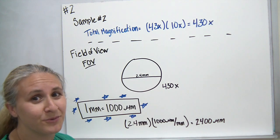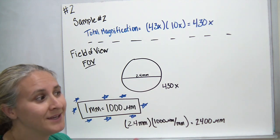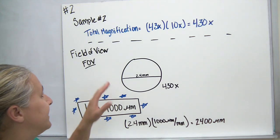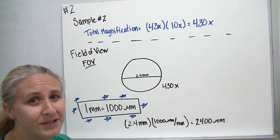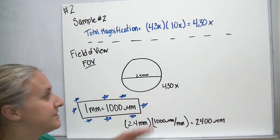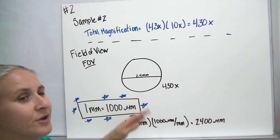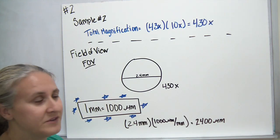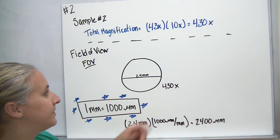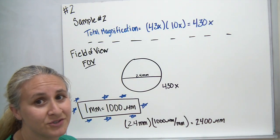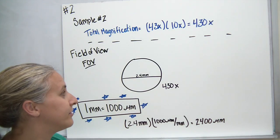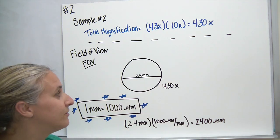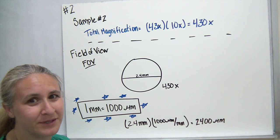Sometimes when we look at things underneath the microscope, they're so tiny it's hard to tell how big they really are. So one of the things we do is measure underneath the microscope. Typically, when we look through the microscope, the area that you can see we call the field of view, which is often abbreviated FOV. A typical microscope at a total magnification of 430x might have a diameter or field of view of 2.4 millimeters.